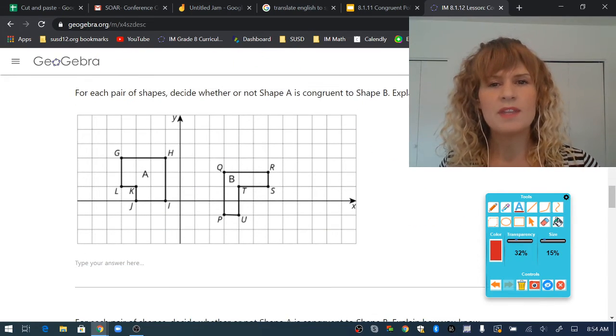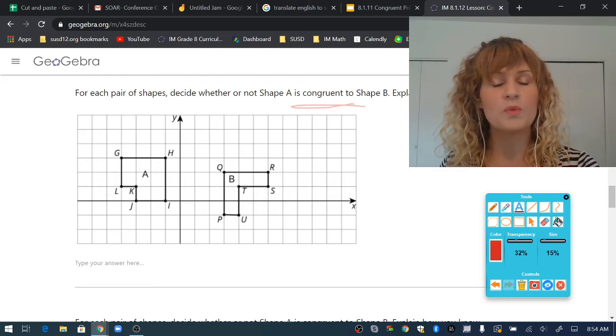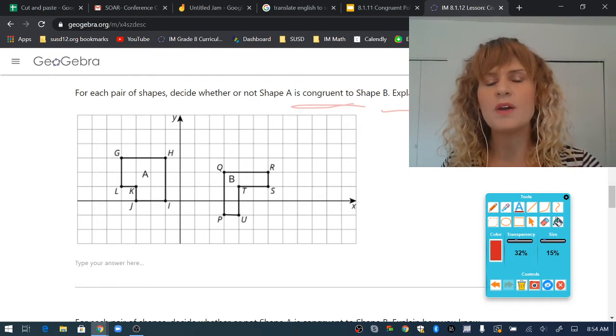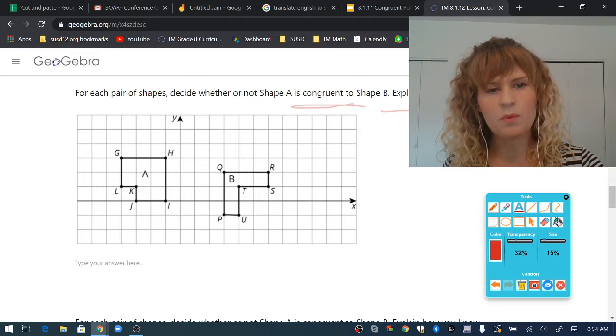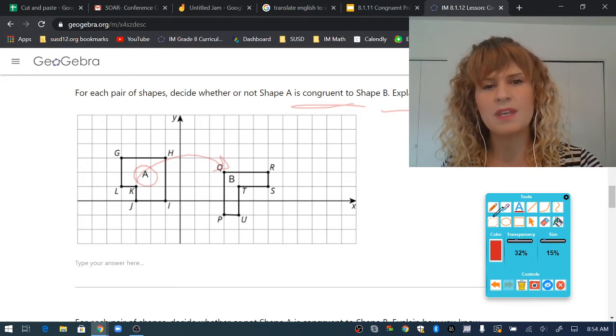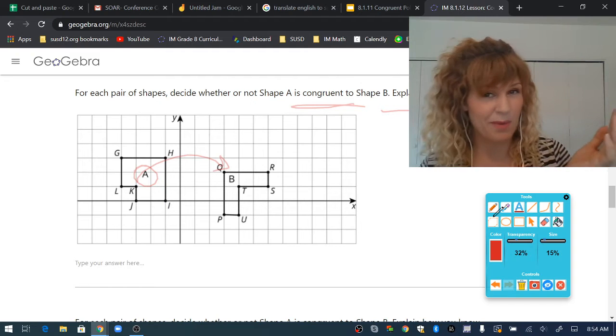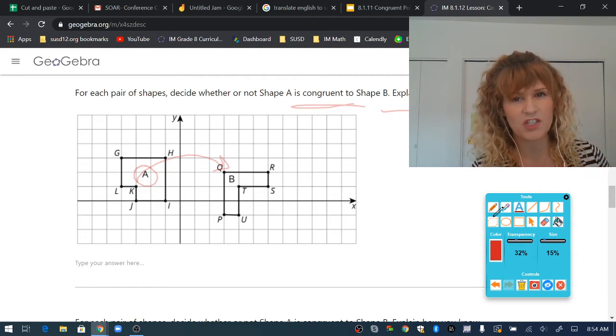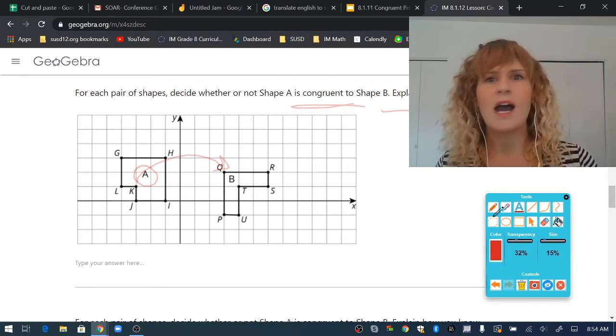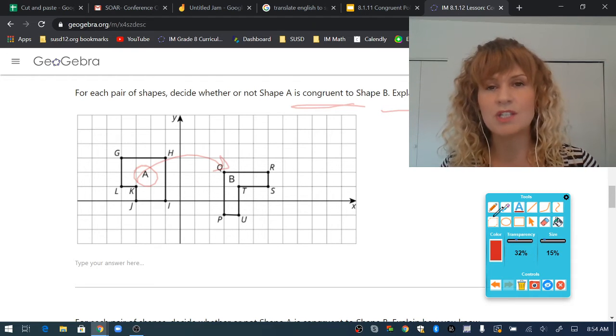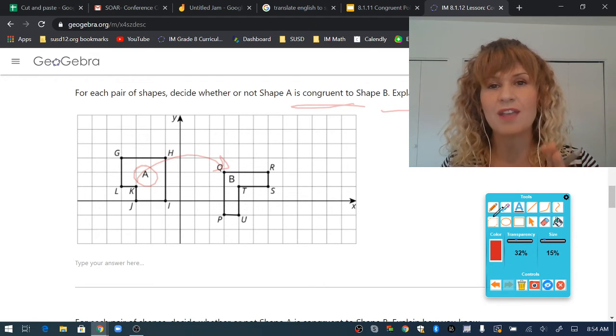How about these two shapes? Are they congruent or not? Explain how you know. In other words, can polygon A move to polygon B by rigid transformations? Rotations, reflections, and translations? I don't think so. A rigid transformation does not change angles.